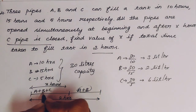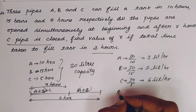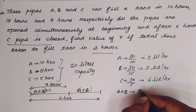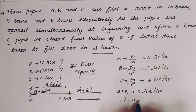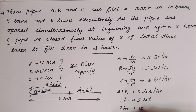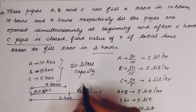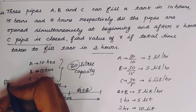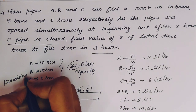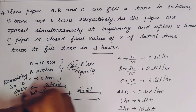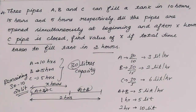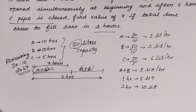A and B together fill 3 plus 2 equals 5 liters per hour. They run for the full 2 hours, filling 5 into 2 equals 10 liters. Total capacity is 30 liters, so remaining is 30 minus 10 equals 20 liters, which is filled by C alone. C fills 6 liters per hour.